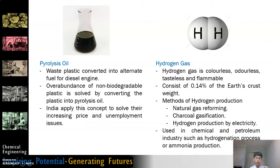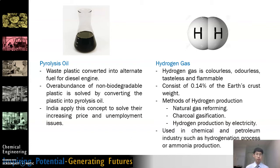One of our main products is pyrolysis oil. Pyrolysis oil is made from plastic composed of carbon, hydrogen, and a few other elements, making it non-biodegradable. In order to solve the over-abundance of non-biodegradable plastic, the plastic is converted into pyrolysis oil, which can be used as an alternative fuel for diesel engines. This will help minimize plastic waste. For example, India has applied this concept to address increasing crude oil prices and unemployment issues.